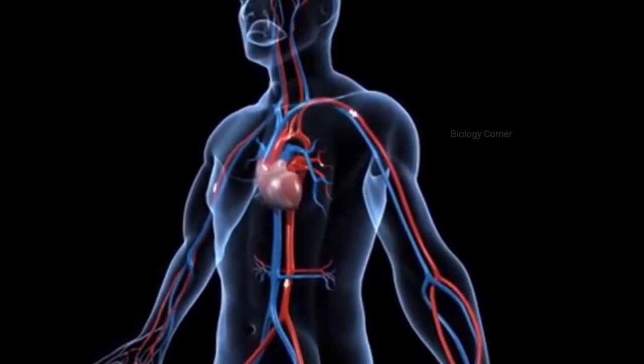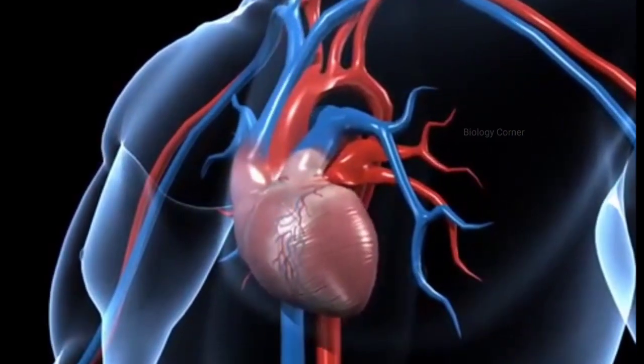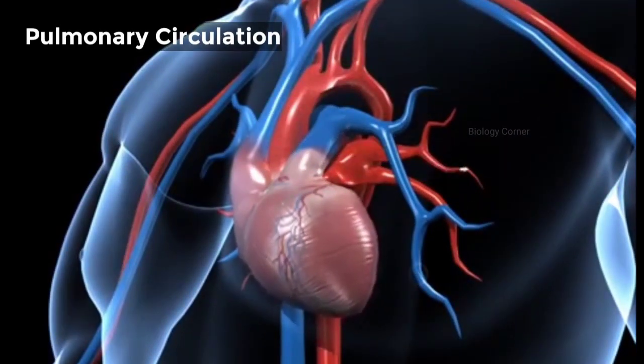The whole circulation in which deoxygenated blood is carried to the lungs and then oxygenated blood is brought back to the heart is called pulmonary circulation.